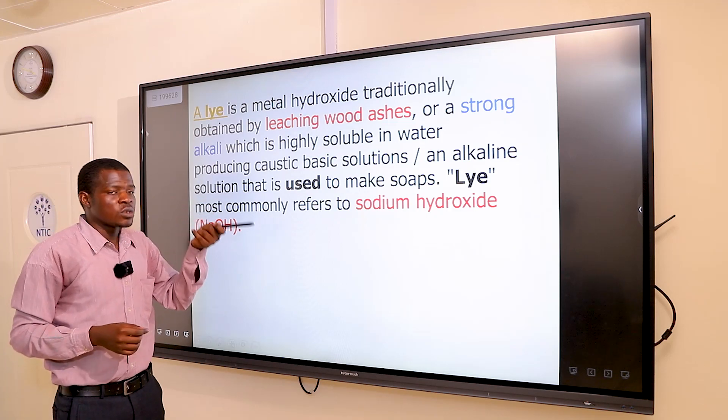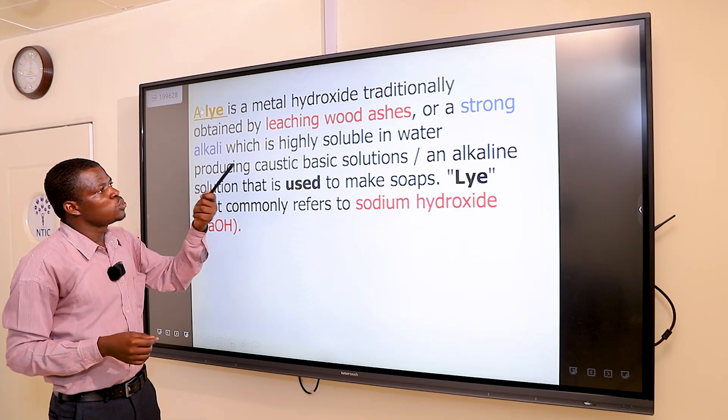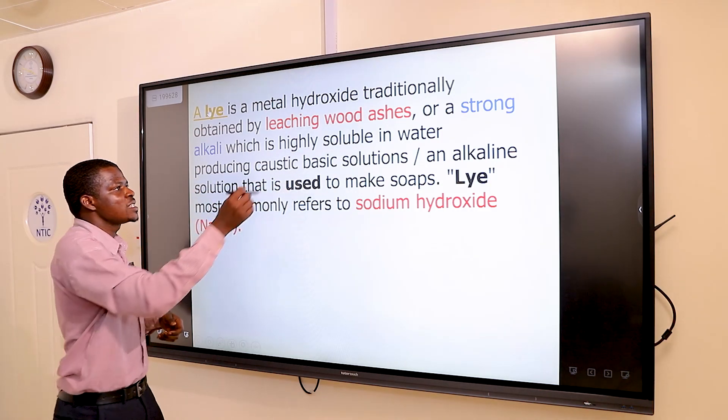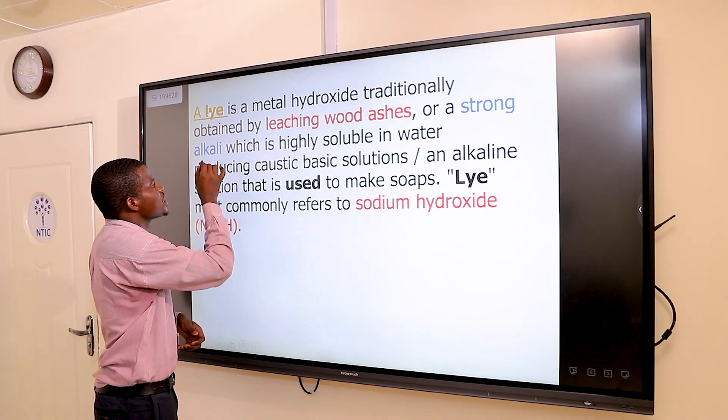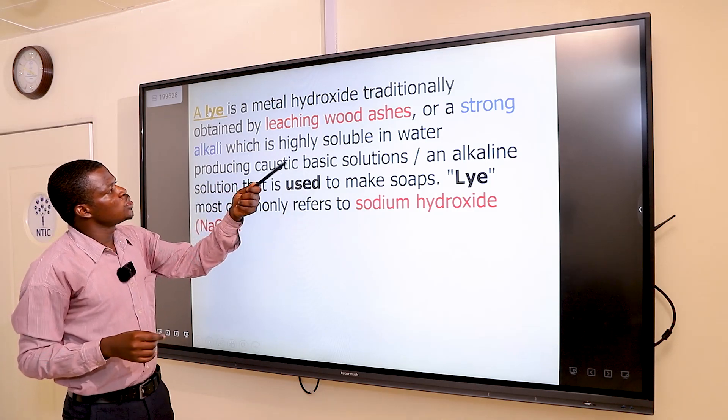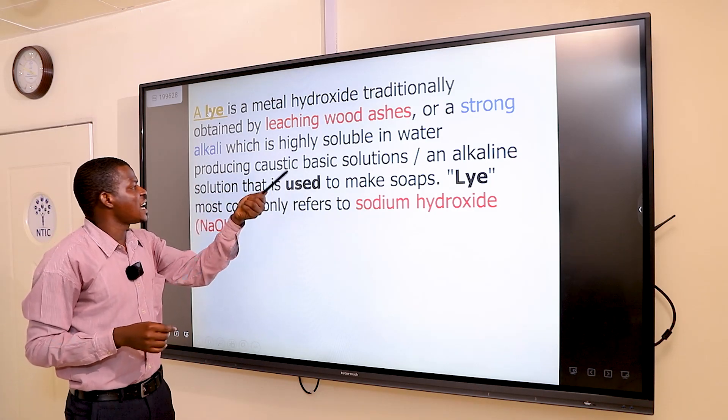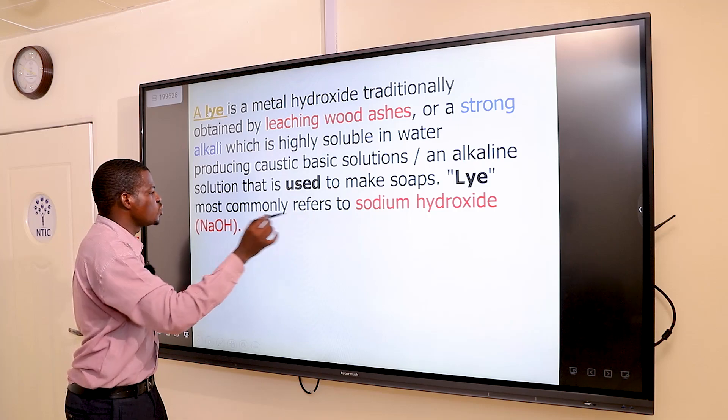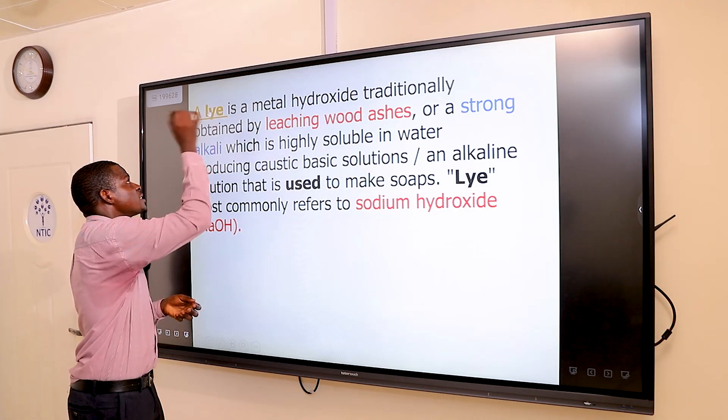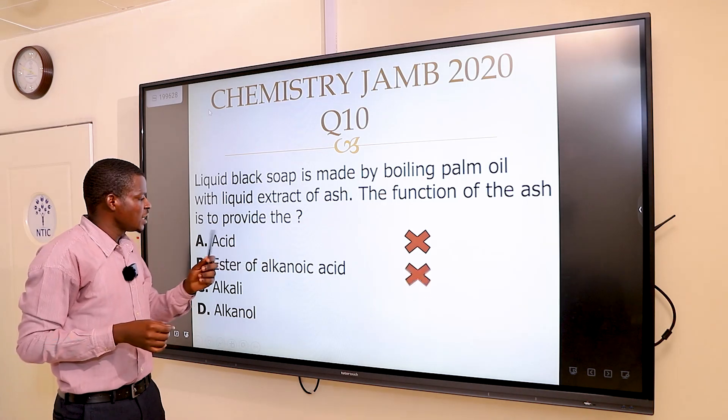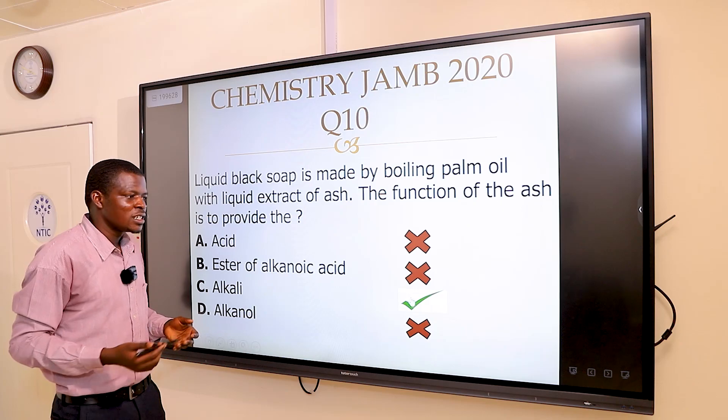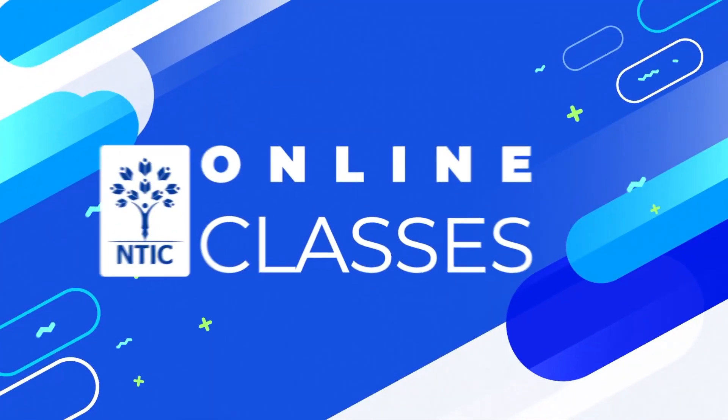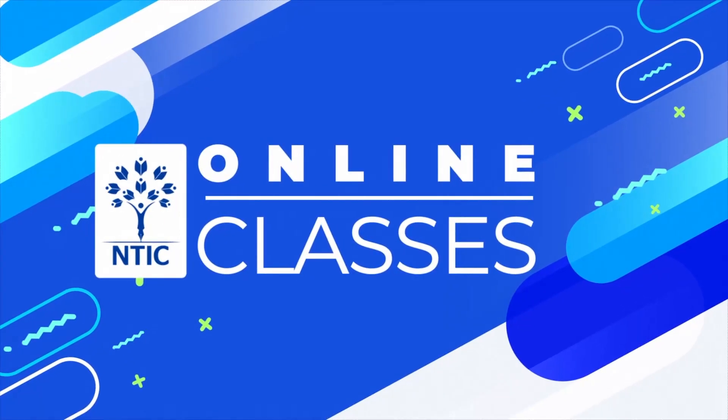A lye is a metal hydroxide traditionally obtained by leaching wood ashes or a strong alkali, which is highly soluble in water, producing caustic basic solutions or alkaline solution that is used to make soaps. Lye most commonly refers to sodium hydroxide. From what we have seen, A is wrong, B is wrong, D is wrong, and obviously the correct answer must be option C.